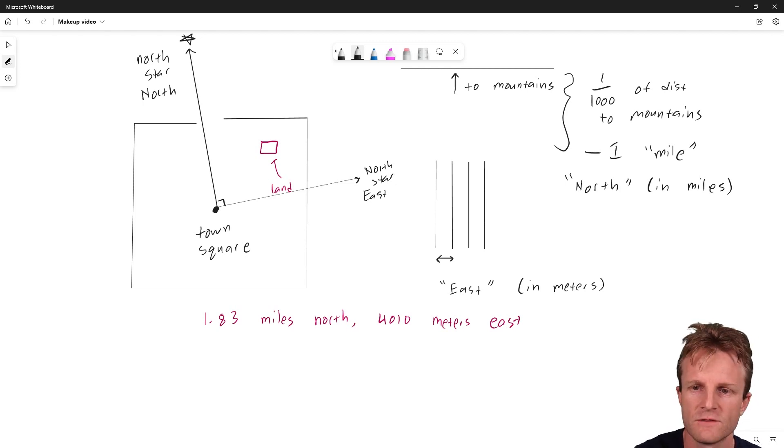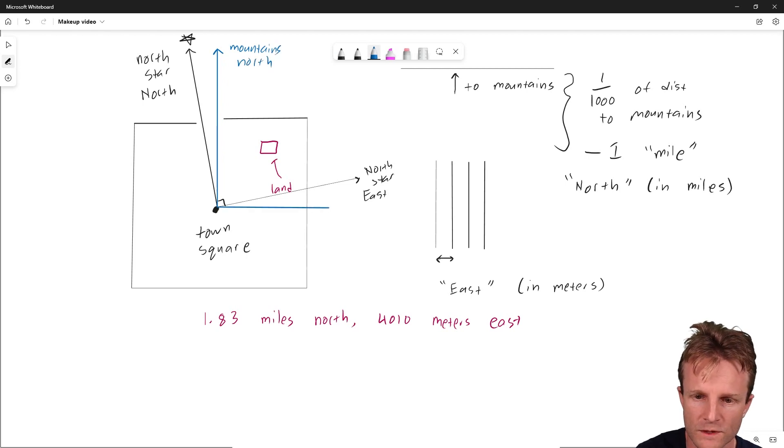And I've drawn them as kind of exaggeratedly different. This is to the mountains. So mountains, the true definition. And this is to the, you know, along ridges. So this is mountains east, let's say, or ridges east. Just write east in blue. And we know they're a little bit different, but they haven't figured it out yet.